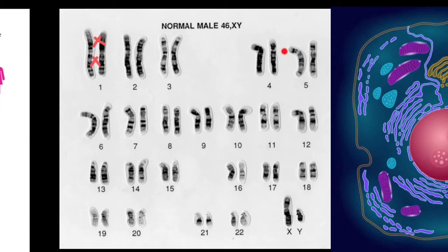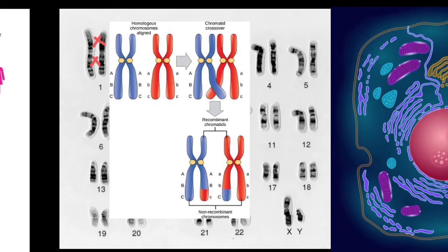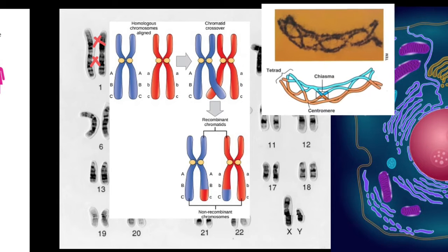Such recombination is going to happen with your father's chromosomes, and for each chromosome it is also going to happen with your mother's chromosomes. Usually in your textbooks, you can see pictures where we see two sister chromatids and two homologous chromosomes, and only two non-homologous sister chromatids exchange genetic material, giving two non-recombinant and two recombinant chromosomes. But this is an oversimplification.